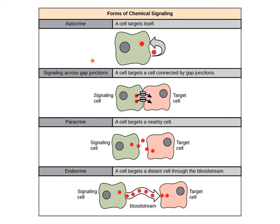We have cytosolic sharing through gap junctions — very short distance. We even have autocrine signaling, where a cell signals itself. Paracrine involves signals diffusing within a few cell diameters. And endocrine refers to diffusible signals that move more than five to ten cell diameters — that's what we call hormones in the long-distance context.